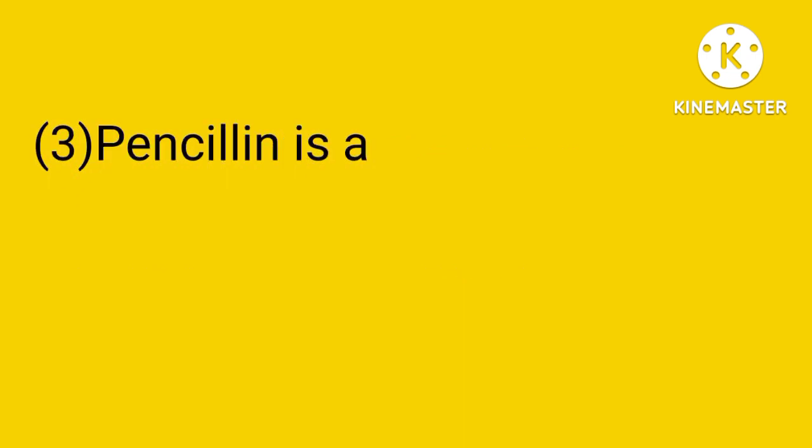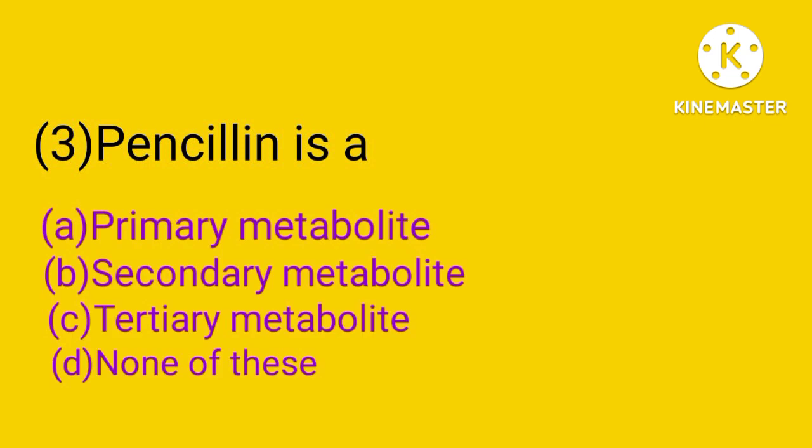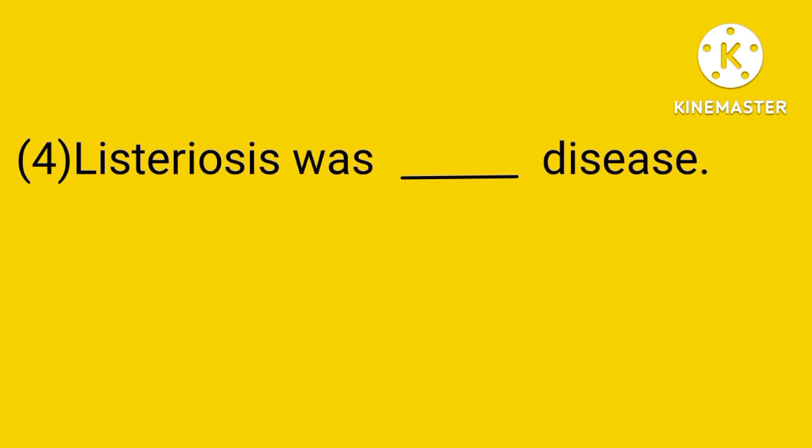Question number 3. Penicillin is a: primary metabolite, secondary metabolite, tertiary metabolite, or none of these. The answer is B. Penicillin is a secondary metabolite.